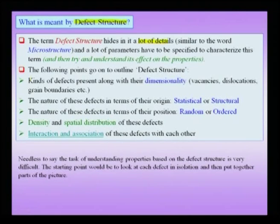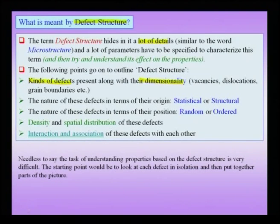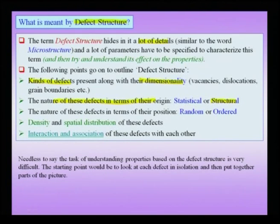We must take this further to understand defect structure in terms of its influence on the properties of the material. We need to worry about the kinds of defects present along with their dimensionality. We also need to understand the nature of these defects in terms of their origin — for instance, are these defects statistical in nature or structural in nature? Some of these terms, like 'structural defect' or 'statistically stored defect', may be new to you.